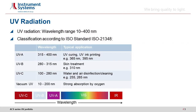UV radiation covers an extremely broad wavelength range between 10 and 400 nm. According to the ISO standard 21348, it is subdivided into four areas. The UVA range lies between 315 and 400 nm. Typical applications are UV curing and UV ink printing.